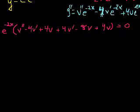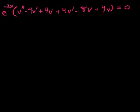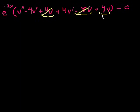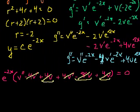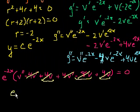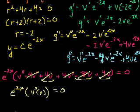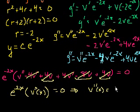After all that simplification, we're left with e^{-2x} times v'' equals 0. Since e^{-2x} can never equal zero, we must have v'' equals 0. So we've reduced to a very simple separable equation: the second derivative of v with respect to x equals 0.